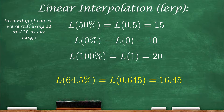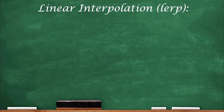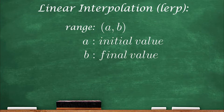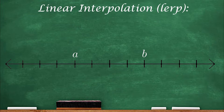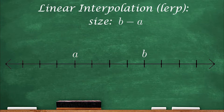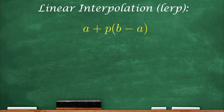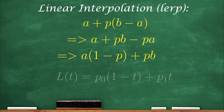Now that we know what values to expect from our LERP function, how do we assemble it? Consider taking a percentage of any number range A to B, where A is the initial and B is the final value. First, we want the size of the range, which is B minus A. The range starts at A, so any number in the range is A plus some percentage of its size. That's the LERP function as used in computing. I'll simplify it with basic algebra to show you its formal version, but it's the exact same expression.